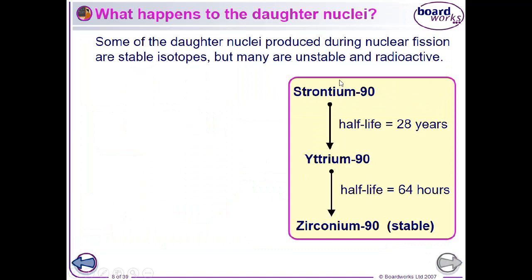Some of the daughter nuclei are stable, but lots of them are unstable and radioactive. For example, strontium-90 undergoes a beta decay to turn into yttrium-90.